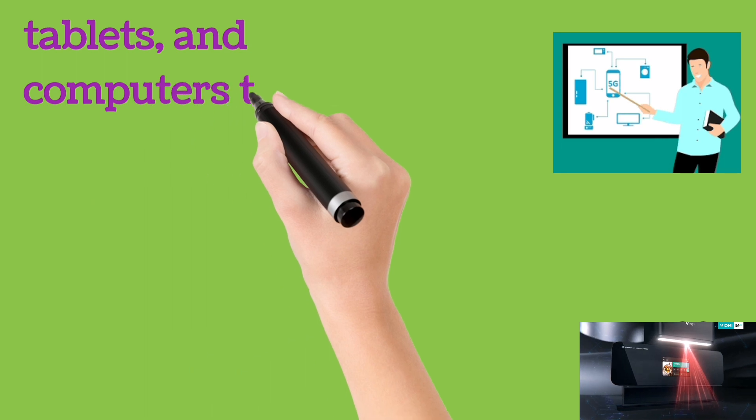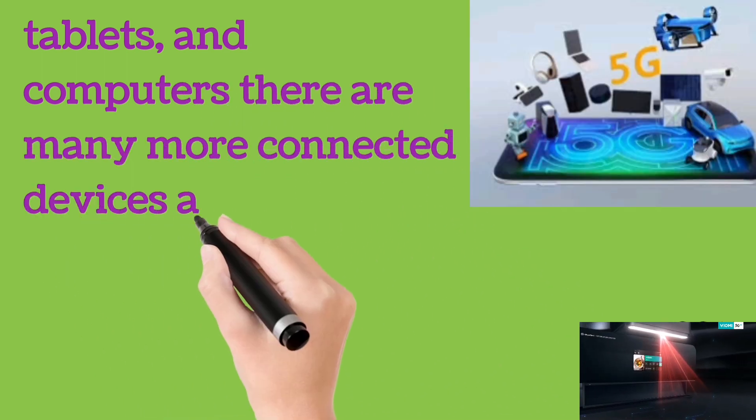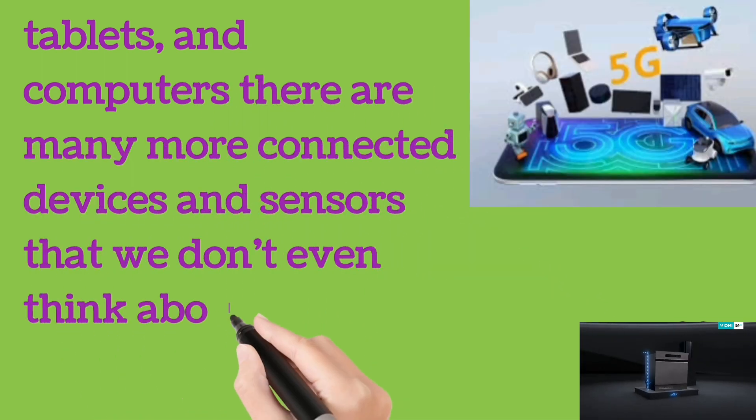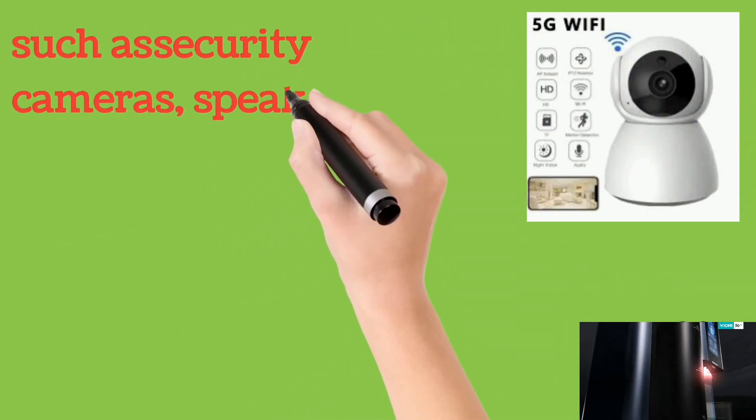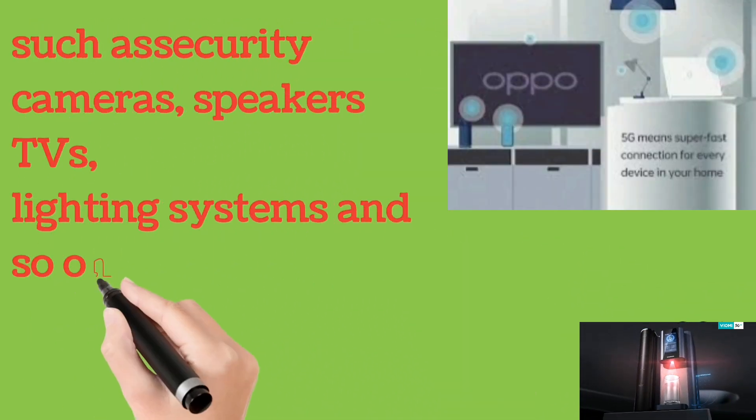In addition to smartphones, tablets, and computers, there are many more connected devices and sensors that we don't even think about in our homes, such as security cameras, speakers, TVs, lighting systems and so on.